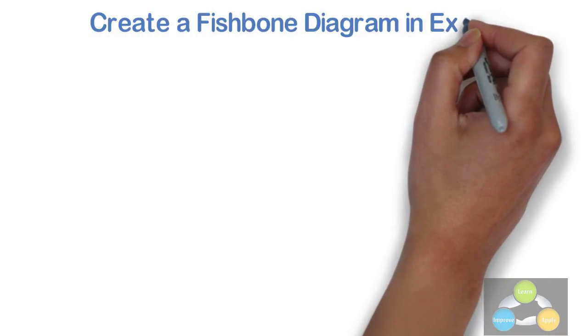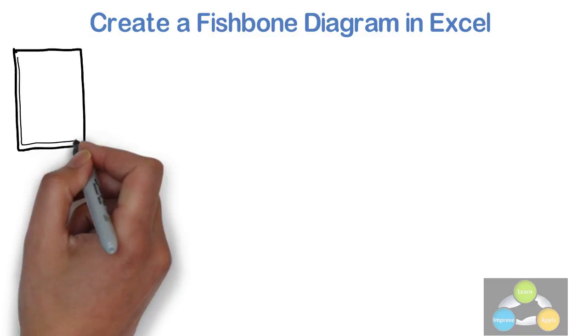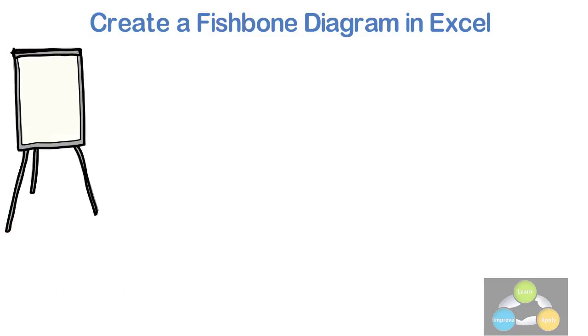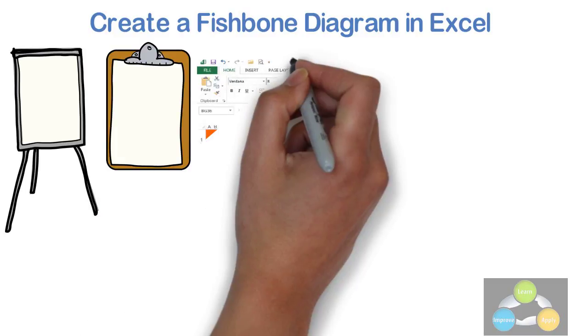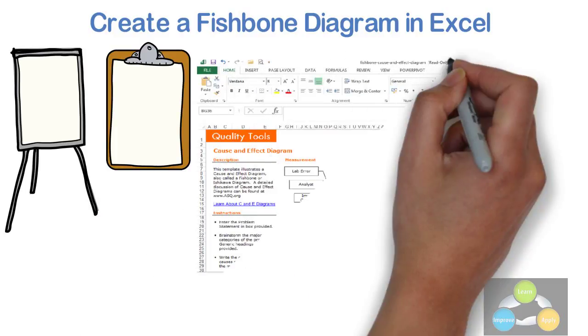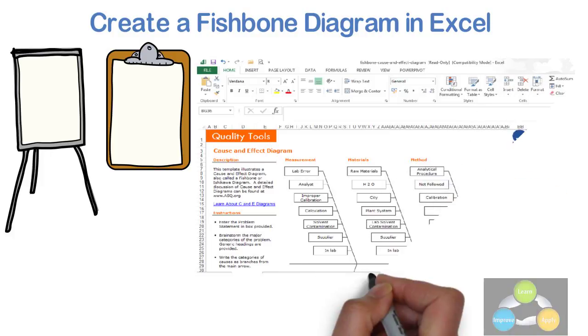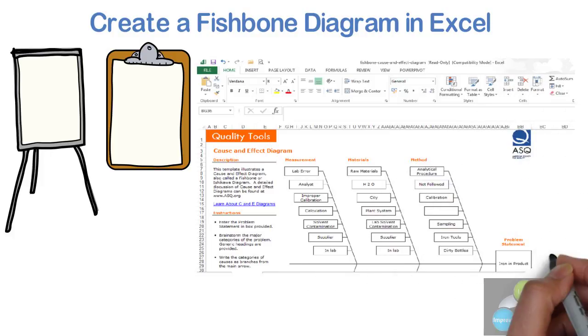Now create a fishbone diagram in Excel. As I explained, it is very easy to prepare on whiteboard or paper and can be used for analysis. You can also easily draw it in Excel. Excel template is also available on ASQ site for ready-made format of 6M analysis.